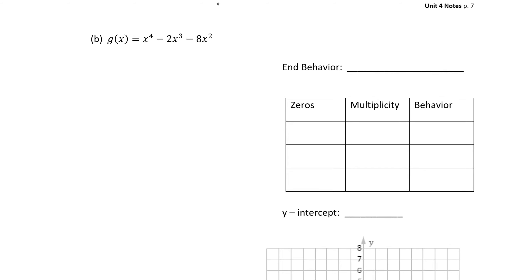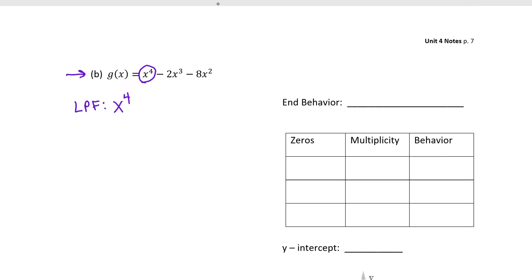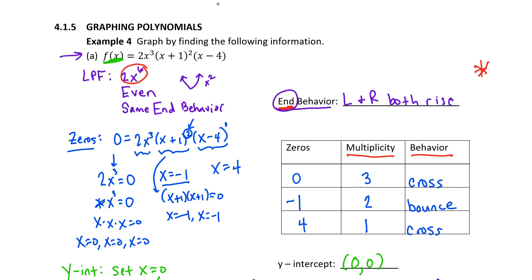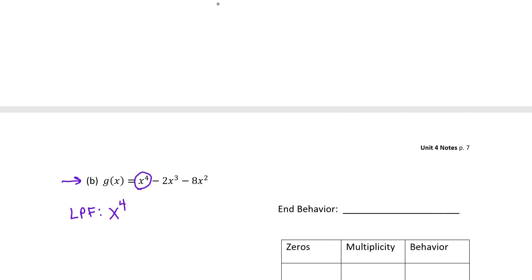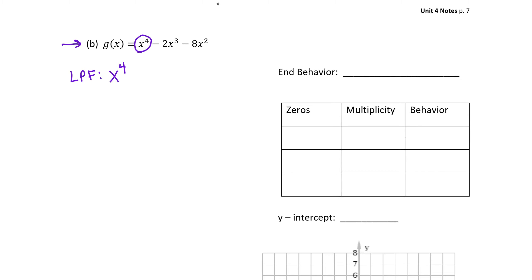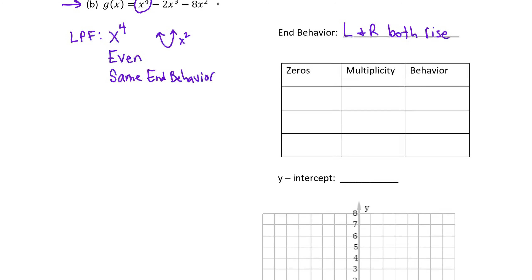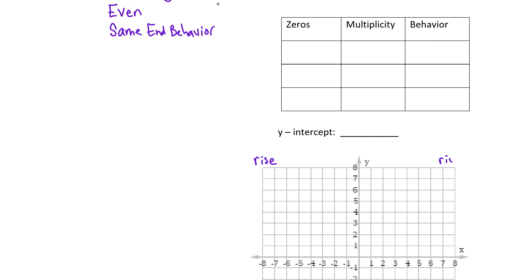Let's practice again. The end behavior depends on our leading power function. In this case the polynomial is in multiplied-out form, so we can quickly spot the leading power function. Notice the difference from the previous example, which was in factored form — convenient for finding zeros but required extra thought for the leading term. Here we can directly observe the leading power function is x to the fourth. That is even degree, so we expect the same end behavior: left and right sides both rise.